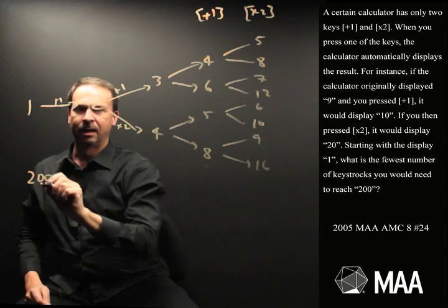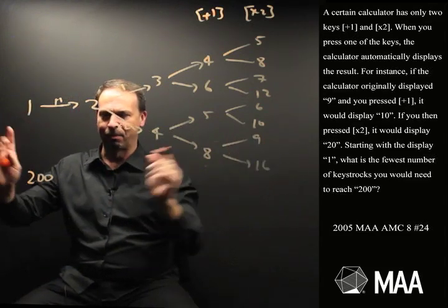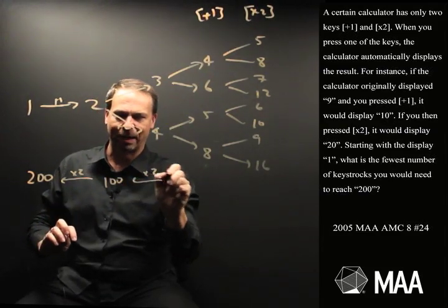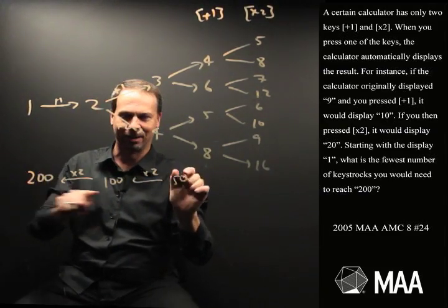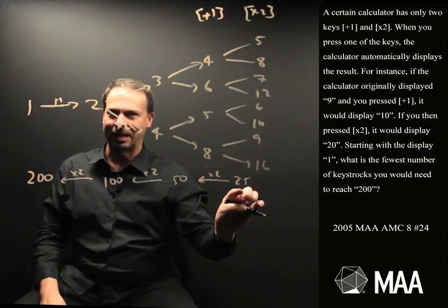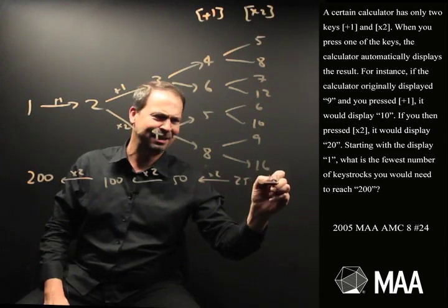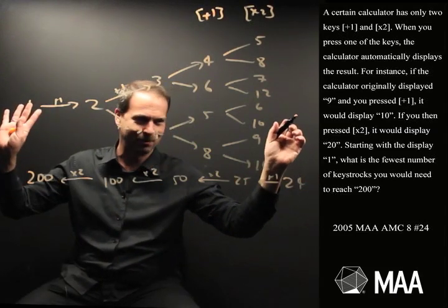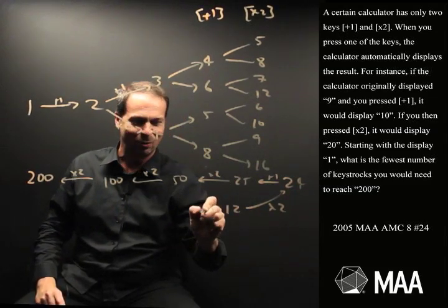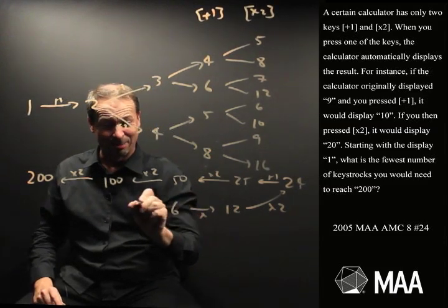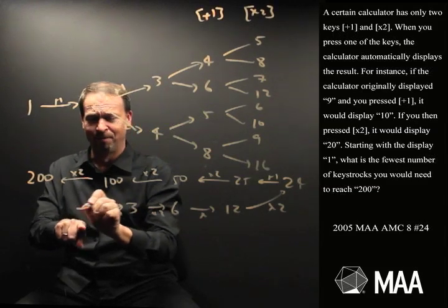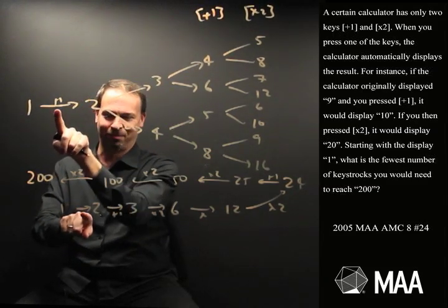For example, if I start from 200, one way to get there would be from doubling — so maybe it came from times 2 from 100, which maybe came from times 2 from 50, which came from times 2 from 25. But 25 didn't come from times 2ing anything, so that must have come from plus 1ing — it must have come from 24. Times 2ing seems most efficient, so 24 came from 12, 12 from 6, 6 from 3. That's odd — I can't times 2 into 3, so that came from plus 1ing from 2, which came from 1.